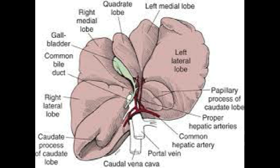The caudate process of the caudate hepatic lobe of the dog also contains a renal impression for the right kidney, while the papillary process is located inside the lesser omentum of the stomach. The quadrate hepatic lobe is undivided in case of dogs.